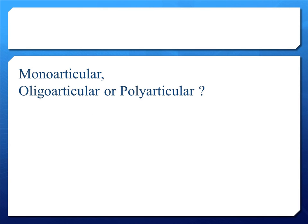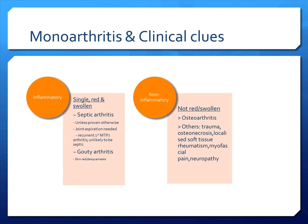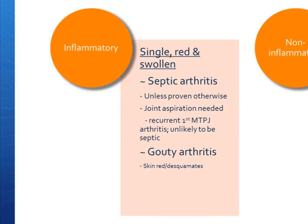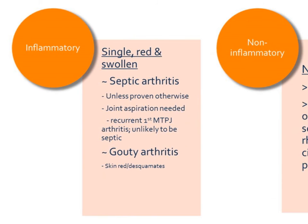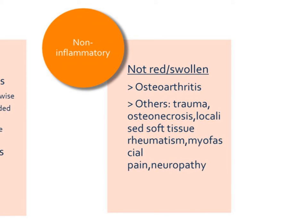Next, we have to identify the number of joints involved. In patients with monarticular joint involvement, it can be inflammatory or non-inflammatory. In inflammatory joint pain, they often present with a red swollen joint, and the conditions to consider will be septic arthritis or gouty arthritis. However, in non-inflammatory cases, the joints are often not red and can be mildly swollen, and one would have to consider osteoarthritis, trauma, osteonecrosis, or even soft tissue rheumatism.